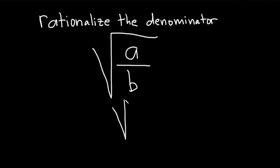So this is really the square root of a over b. And basically we need to get rid of the square root on the bottom.